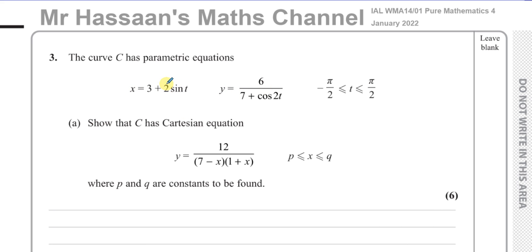And we have to change this equation, or change the form of it into a Cartesian equation, which is when you have Y in terms of X, just in terms of Y and X, no third parameter.